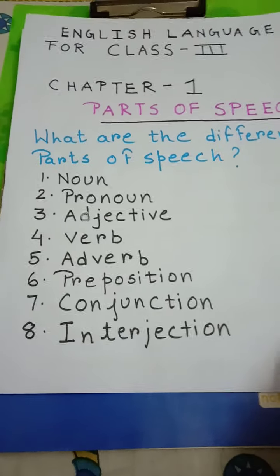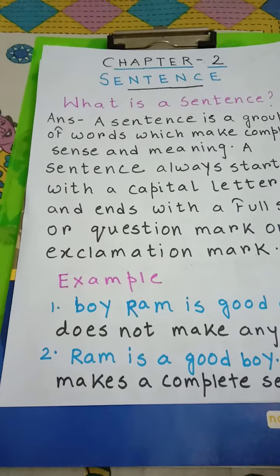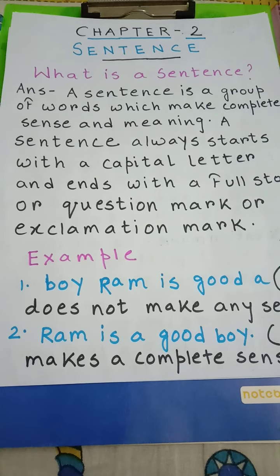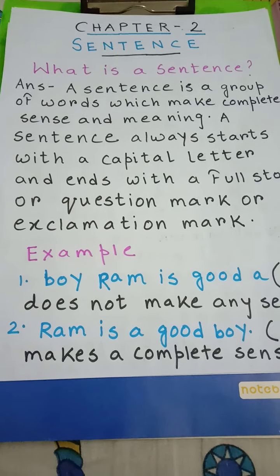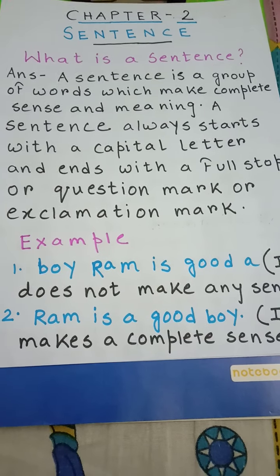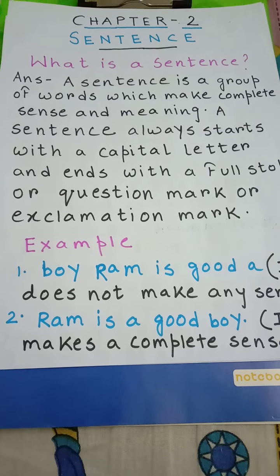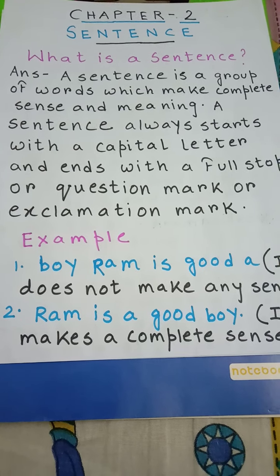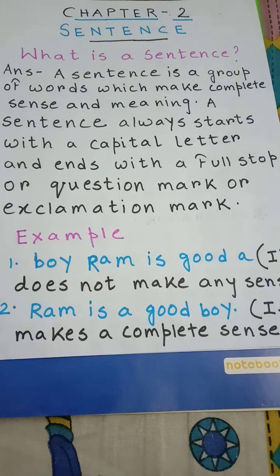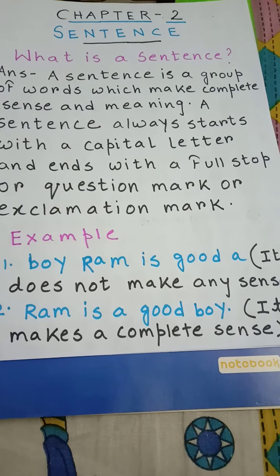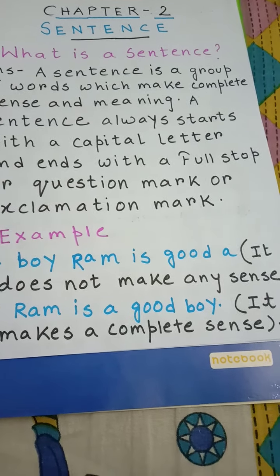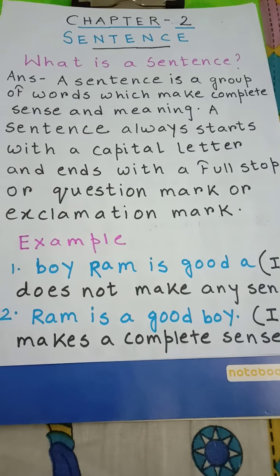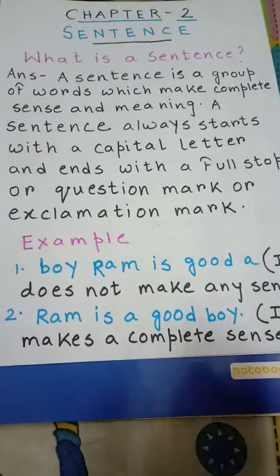Let us now go to our second chapter: Sentence. What is a sentence? A sentence is a group of words which make complete sense and meaning. A sentence always starts with a capital letter and ends with a full stop, question mark, or exclamation mark. Example: 'Boy Ram is good a' — it does not make any sense. Number 2: 'Ram is a good boy' — it makes complete sense.